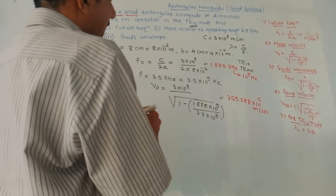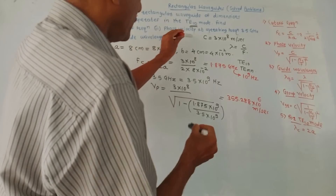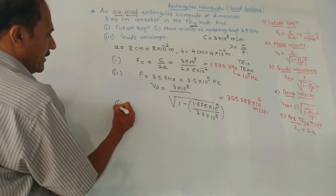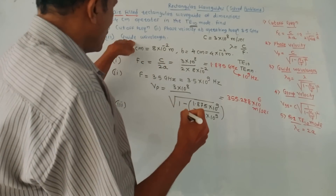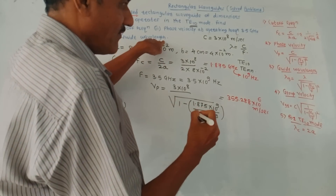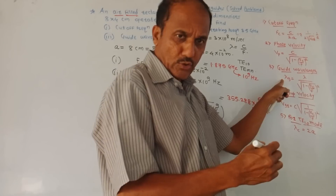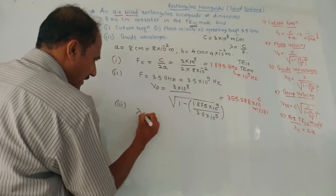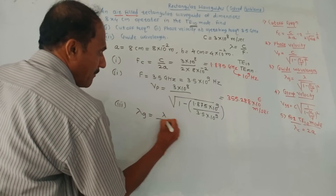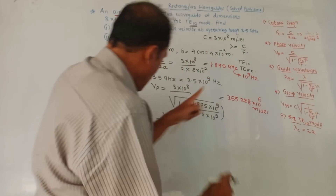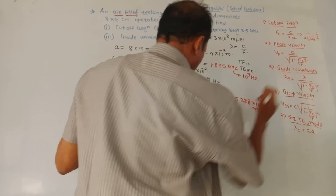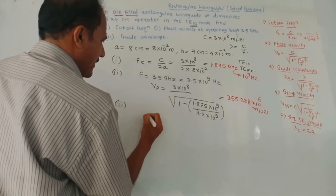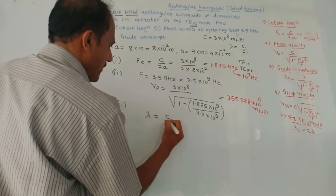This is the answer of the second part — we calculated the value of phase velocity. Now third part: it is asked to calculate guide wavelength. We have this formula: lambda g equals lambda upon the square root of 1 minus (fc/f)². For this I need to calculate the value of lambda, the operating wavelength. We know that lambda is c by f.